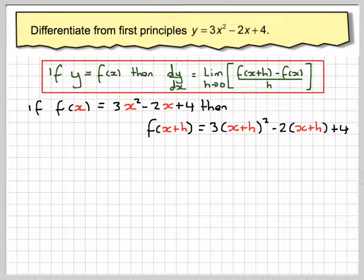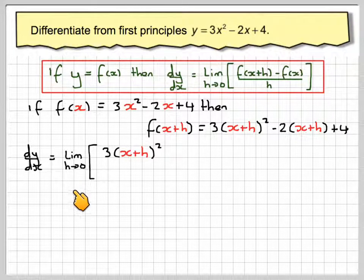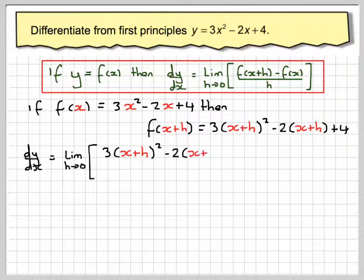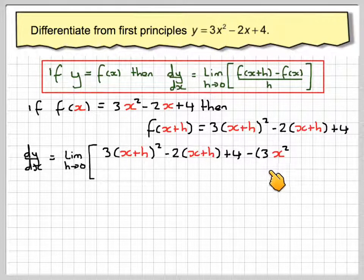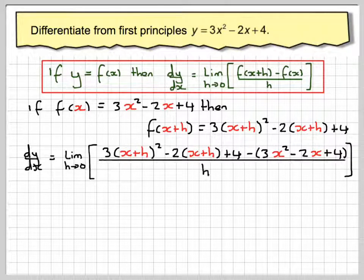Now substituting into this, we have dy/dx equal to the limit as h goes to 0 of 3 times x plus h all squared minus 2 times x plus h plus 4. The next bit, because you are going to take all of it away, you need to put it in brackets. So it is minus bracket 3x squared minus 2x plus 4, close the bracket, all over h.